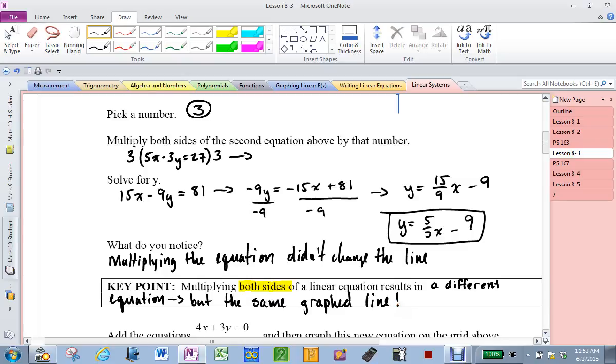Does everybody see that? If this class actually listened to me, and everybody had done this with a different number, you would have noticed that no matter what we multiplied it by, positive or negative, you would get the same line. Everybody understand? Meaning, you are in charge. You can change the equations to look how you want them to look, and still get the same results. Everybody cool?